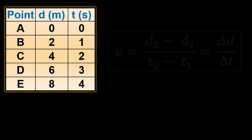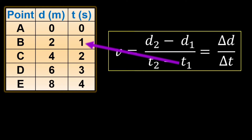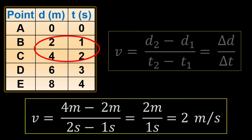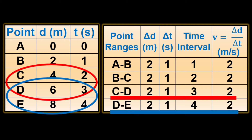The same applies to points B to C, where B is point 1 and C is point 2. D₂ is 4 meters from point C and D₁ is 2 meters from point B, while T₂ is 2 seconds from point C and T₁ is 1 second from point B. Substituting these values: V equals 4 meters minus 2 meters over 2 seconds minus 1 second, equals 2 meters over 1 second, giving a speed of 2 meters per second. The same calculation applies to points C to D and D to E, which all give 2 meters per second velocity.